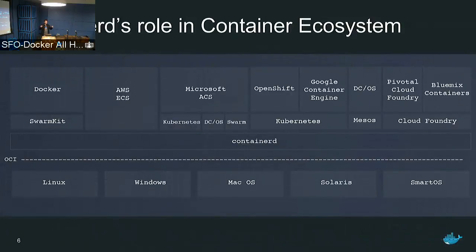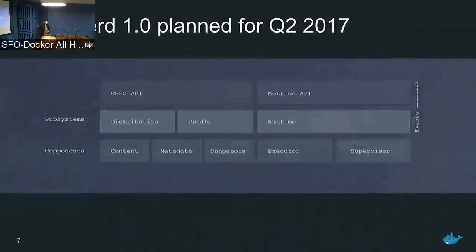On top of that, everybody is free to implement their own full-blown systems. At Docker we're doing that with Swarm Kit and a bunch of other components, and we hope all other systems end up adopting containerd. The target for containerd is to ship in Q2 2017 — so I guess that means the 31st of December 2017.